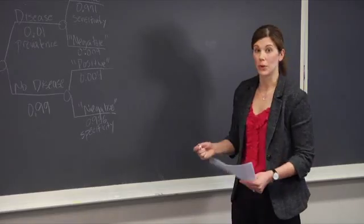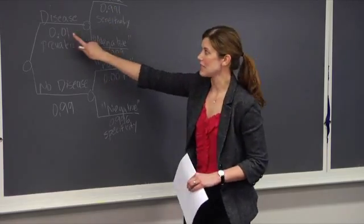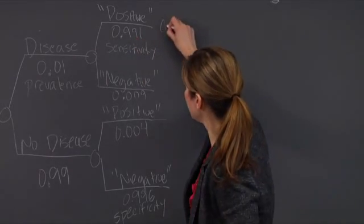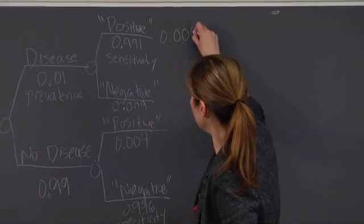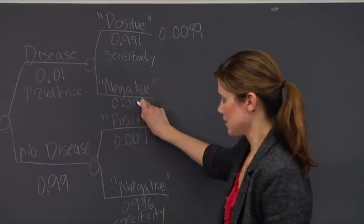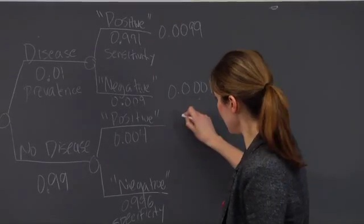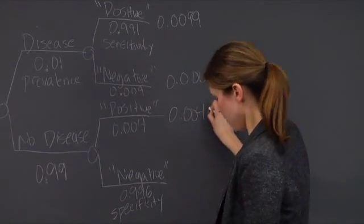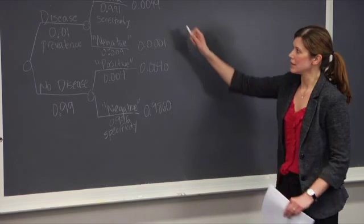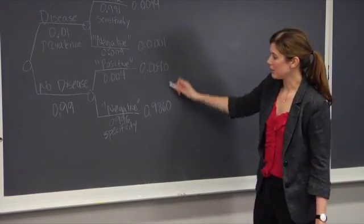The next step is to calculate the joint probabilities. This is done by multiplying probabilities along each branch. For example, 0.01 times 0.991 is 0.0099. Doing this for each of the four branches: 0.01 times 0.009 is 0.0001; the next one is 0.0040; and the last one is 0.9860. These probabilities are referred to as the joint probabilities in the tree, and I should also verify that they sum to 1.